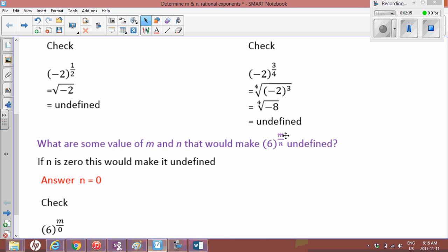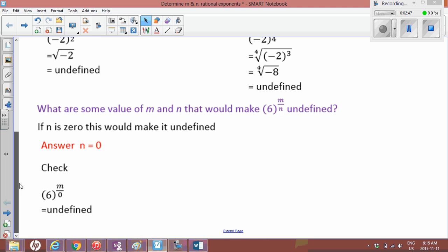So if n is 0, it doesn't matter what m is. It can be 1, 2, 3, 4, a million. You can't do that. It becomes undefined. You cannot take a 0 root. You can't have a 0 in the denominator, period. So the answer for this is n equals 0, m can be anything. So if you check that, 6 to the m over 0 is undefined.